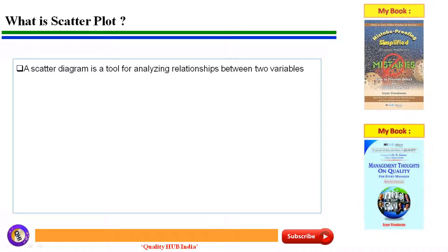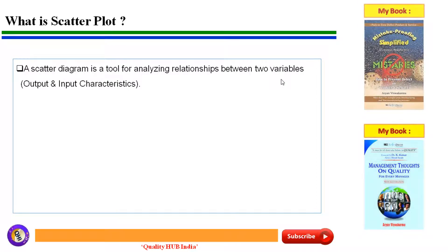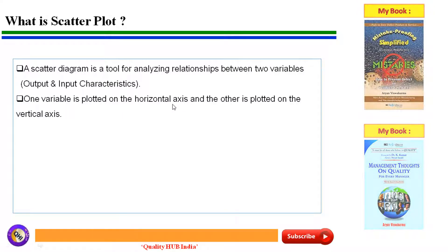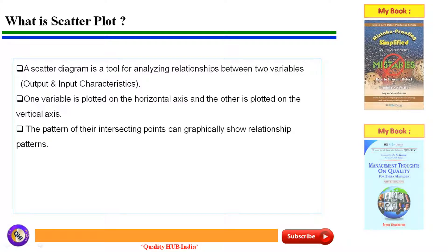A scatter diagram or scatterplot is a tool for analyzing the relationship between two variables. Usually one variable is the dependent variable and the other is the independent variable — also called output and input characteristics. One variable is plotted on the horizontal axis, which is the x-axis, and the other is plotted on the vertical axis, which is the y-axis.